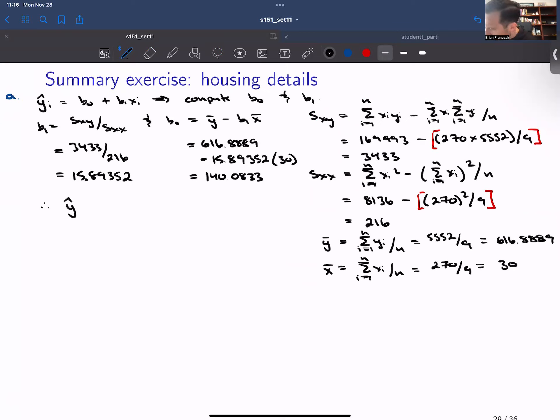Therefore, our solution here is yi hat is equal to 140.0833 plus 15.89352 multiplied by xi. So this is the solution to part a. When we are asked to compute a least square regression equation, we want to end up with a model like that underlined in red. So in order to get that model, we have to compute the intercept b0 and the slope b1.